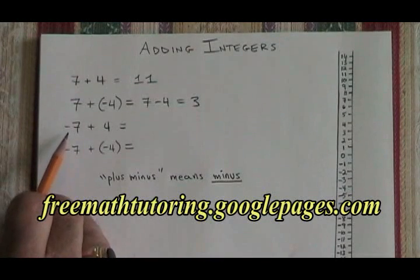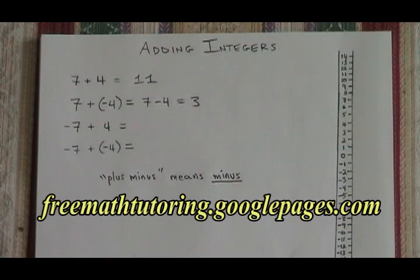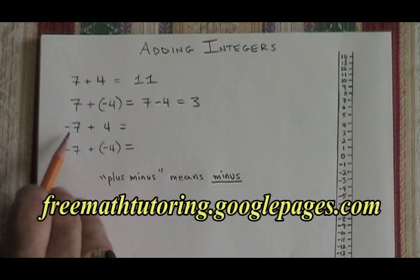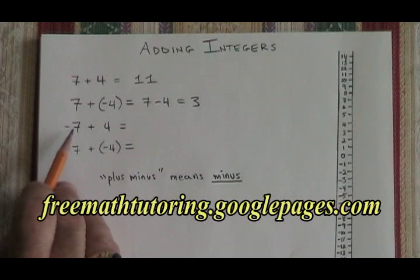When the first integer is the one that is negative, we have negative 7 plus 4. In this case, we are not subtracting — we are adding. But we are adding to a starting point that is negative.